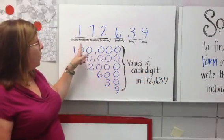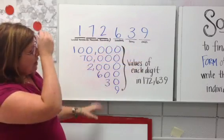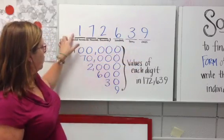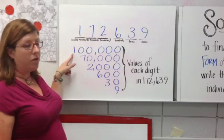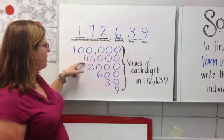Here I took the number 172,639 and I wrote the value of each digit. The 1 in the hundred thousands place has a value of 100,000, while the 7 in the ten thousands place has a value of 70,000.